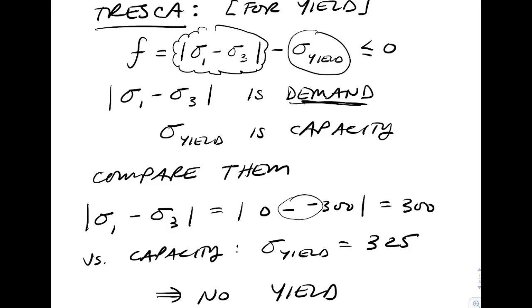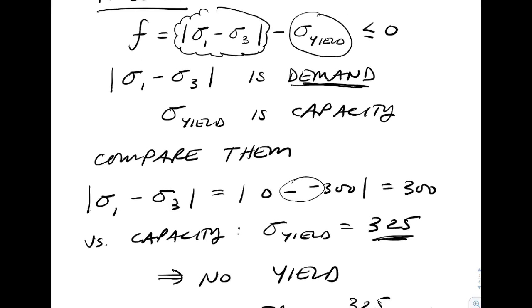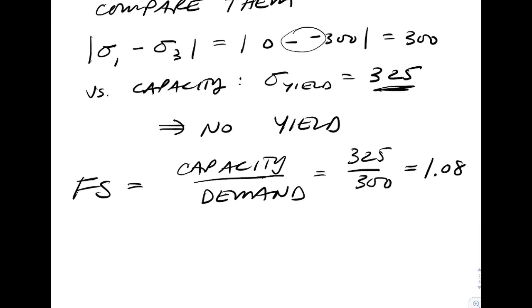Sigma 1 minus sigma 3, keeping track of your double negatives, gives us 300 versus a capacity of 325. The demand does not exceed the capacity, so we have no yielding, and we have a factor of safety of 1.08.